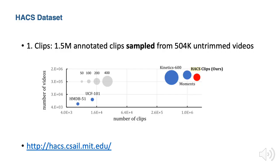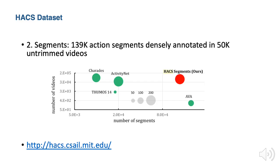The HACS dataset includes HACS Clips and HACS Segments. HACS Clips includes 1.5 million annotated clips sampled from over 500,000 untrimmed videos. In HACS Segments, there are 139,000 action segments densely annotated in 50,000 untrimmed videos. This figure compares the number of segments and videos of HACS Segments with other large-scale action localization datasets: Charades, ActivityNet, THUMOS14, and AVA.